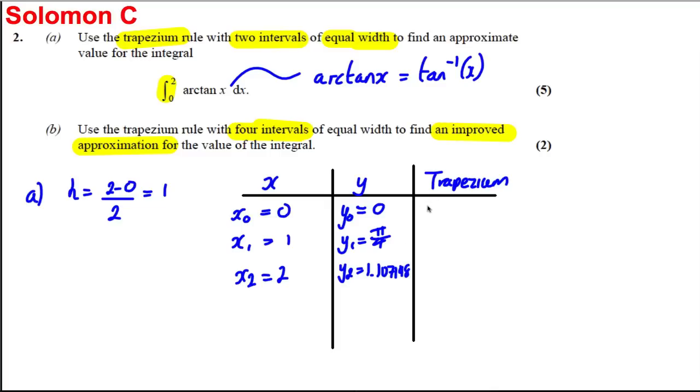Okay. Now the trapezium rule says I keep the y0 and the y2. So y0 is 0 and y2, I'm going to write that home for them, I'll calculate 1.107148718. And we double this one. So we do 2y1. We double this, which would be pi by 2. Now I'm going to total this column.